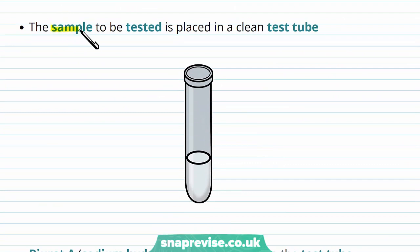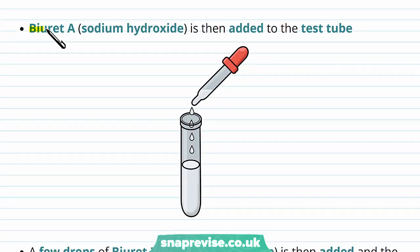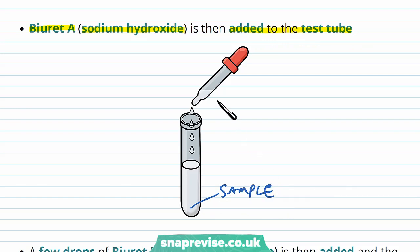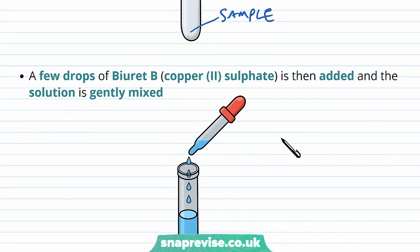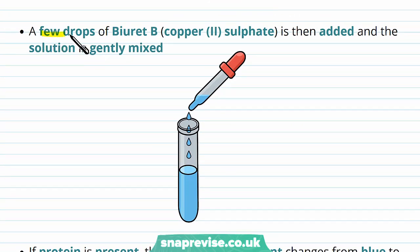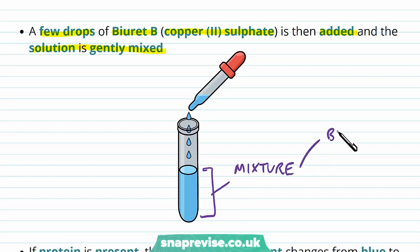First of all, we place the sample that we're testing into a clean test tube so that it sits at the bottom, and then we add the solution called biuret A. Biuret A is a solution of sodium hydroxide and we simply add this to the test tube, forming a mixture. We then add a few drops of biuret B, which is made up of copper sulfate, and the solution is gently mixed. Now we have a complete mixture of biuret A plus biuret B plus our sample.